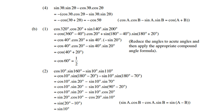A4: sin 3θ sin 2θ minus cos 3θ cos 2θ — this doesn't look familiar yet. However, if you take out a negative, the signs change and it looks familiar as the cosine compound rule with a plus in the middle. But don't forget there is still a negative outside, which you cannot ignore. Therefore, minus cos(3θ plus 2θ), which is minus cos 5θ.